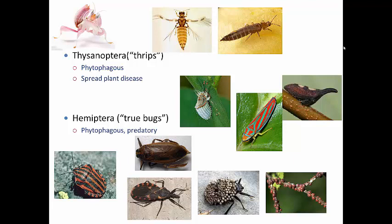Thrips can cause a lot of problems in agriculture and spread plant disease. If you go on to a plant class or a crop insect class, you'll learn about thrips extensively because they cause a lot of damage, spread disease, and cause a lot of cosmetic damage - meaning you can't sell the fresh produce.